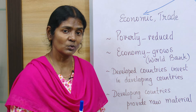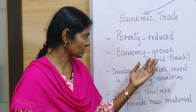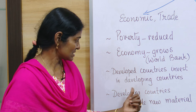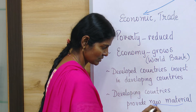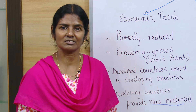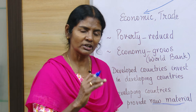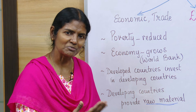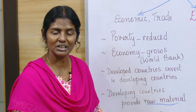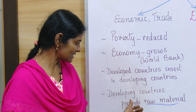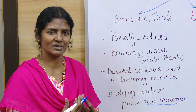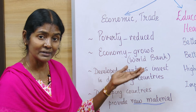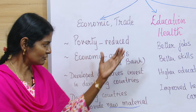The economy grows as developing countries get loans from the International Monetary Fund or the World Bank to develop themselves. Developed countries also invest in developing countries because developing countries have the raw materials. For example, in some remote areas of Africa there are rich mineral mines, which become the raw material for many chemical industries. So developing countries provide raw materials and developed countries provide the methods — and overall everything gets an uplift.